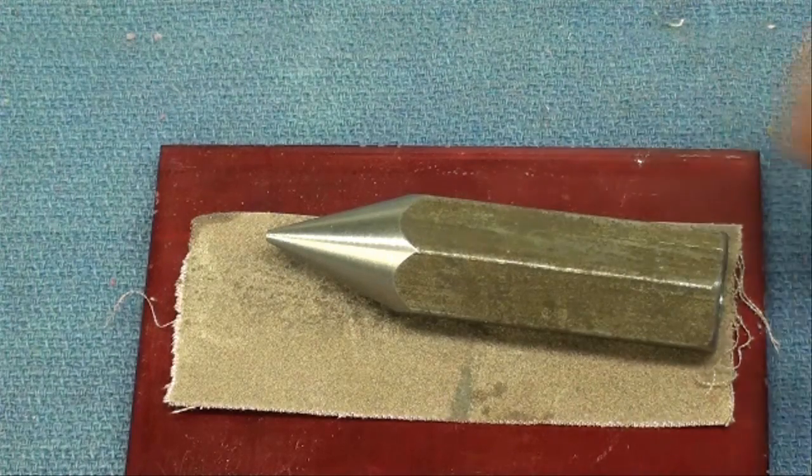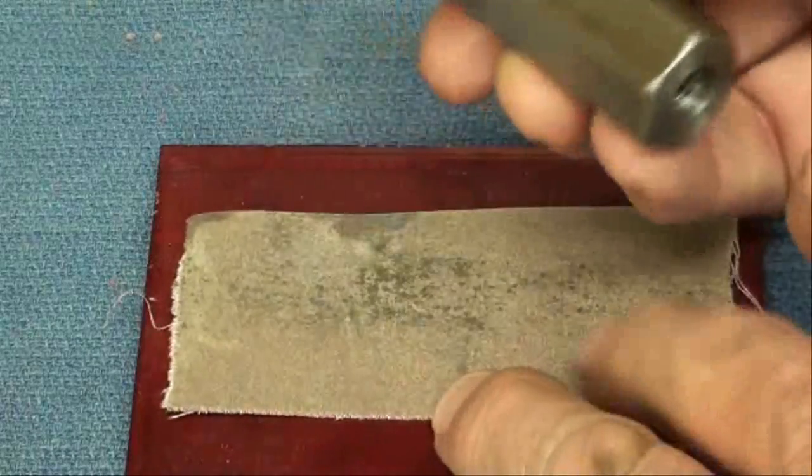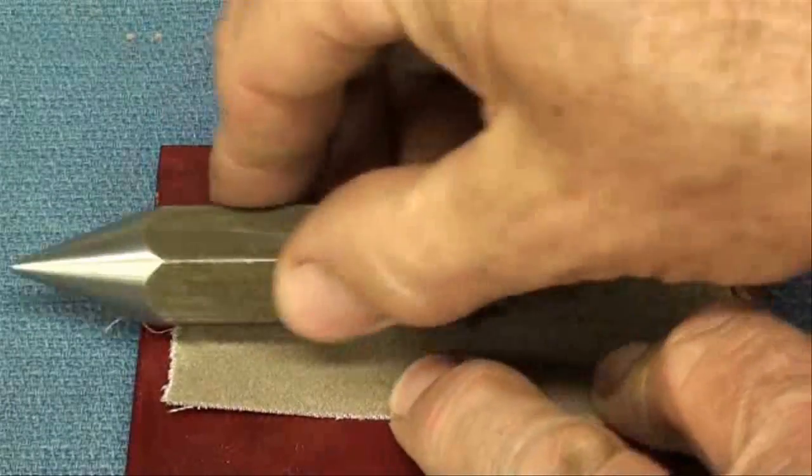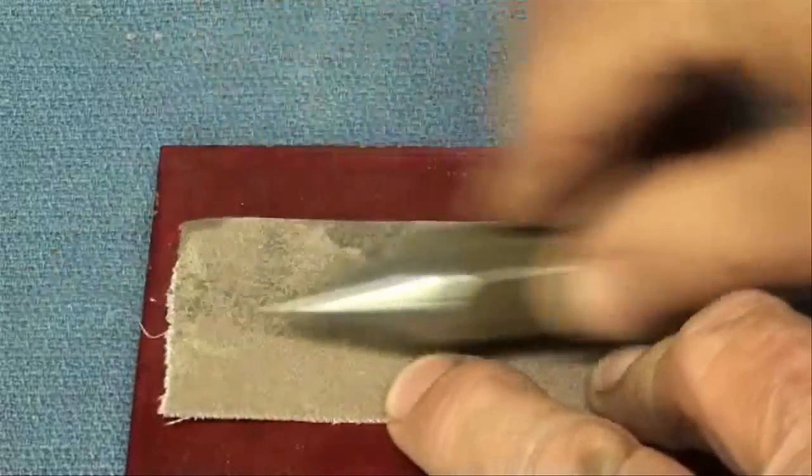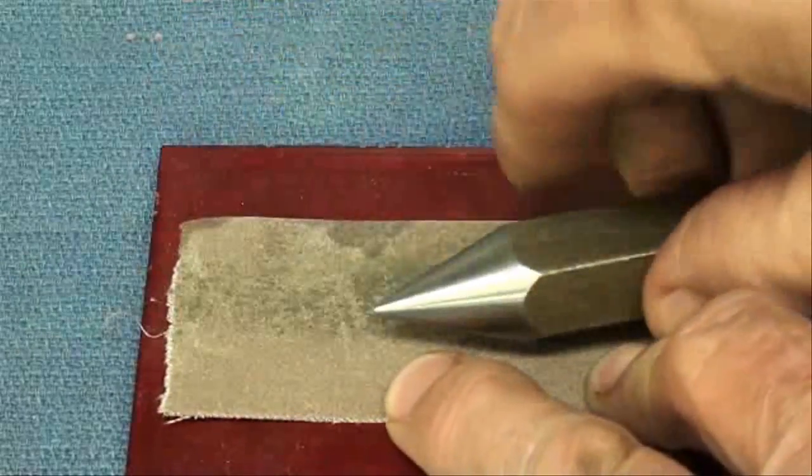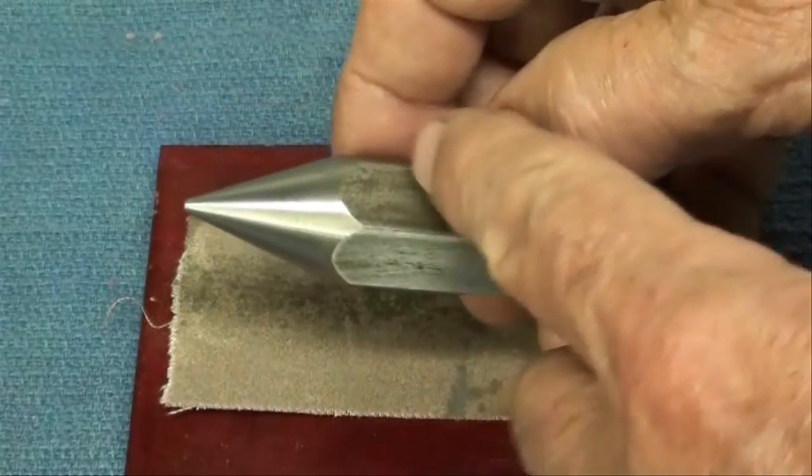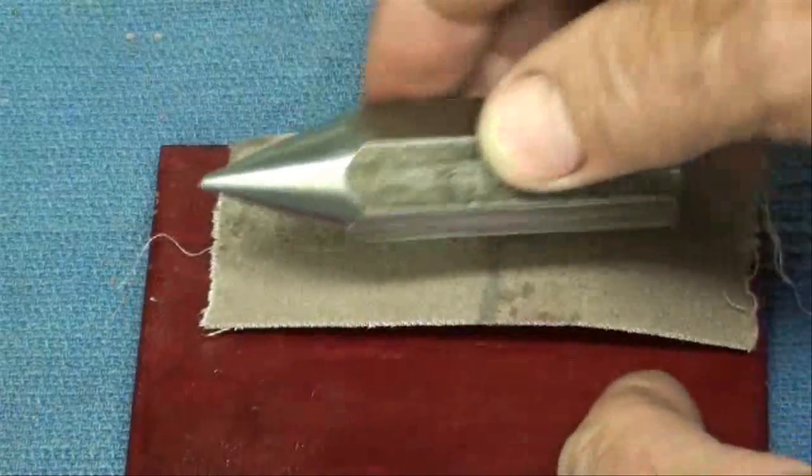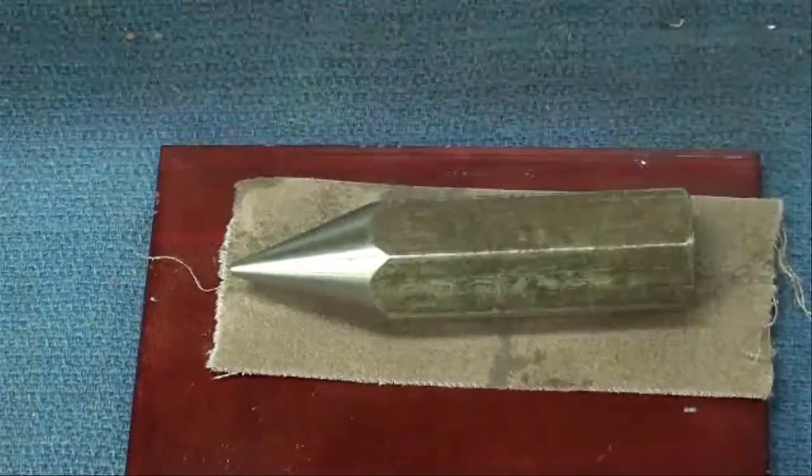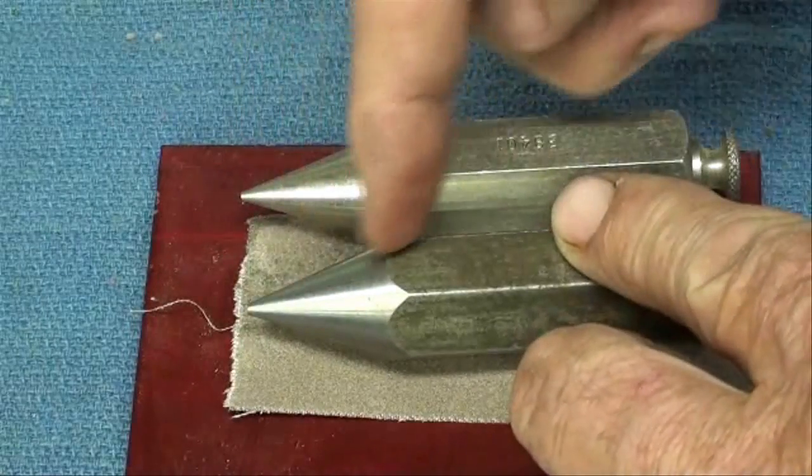Let me show you a few final steps. If you want to clean up the body here, just put some emery cloth on a flat surface and you can polish it just a little bit like that. I wouldn't put it on the disc sander or the belt sander for that. I did give this a couple strokes of file with the file while it was on the lathe.